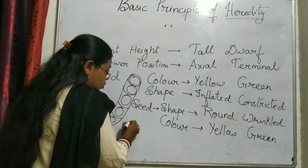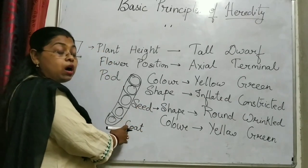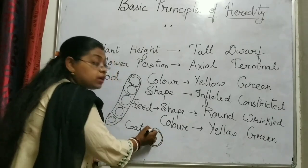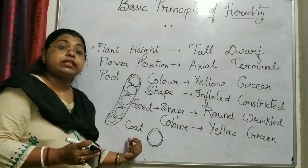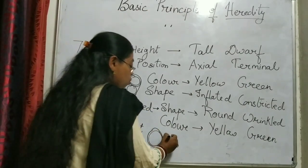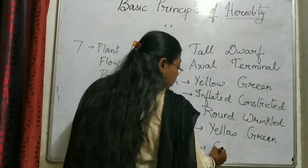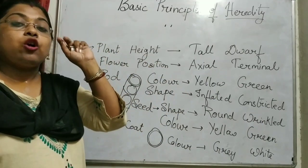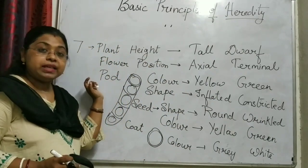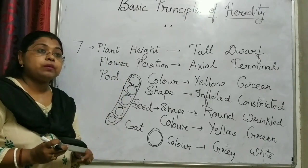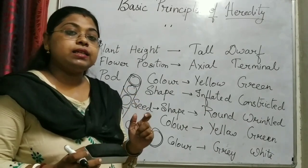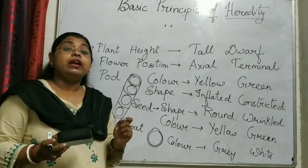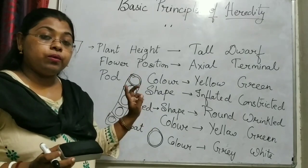Next is the seed coat. The seed coat is a single transparent layer present above the seed. This seed coat has 2 colors: one is grey and another is white. So these are the 7 contrasting characters which Mendel found in the pea plant. When he did experiments on these, he found that all characters have their own identity and they move from one generation to another in a definite pattern.